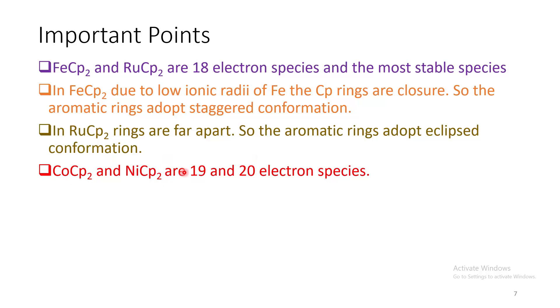Now cobaltocene and nickelocene are 19 and 20 electron species. So they contain electrons in high energy anti-bonding orbitals. Now these electrons can be easily removed that can cause oxidation. So these complexes are very prone to aerial oxidation.